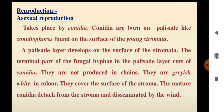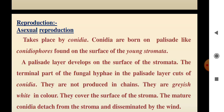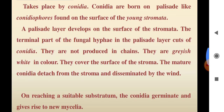Asexual reproduction mainly takes place by means of conidia. Conidia are borne on palisade-like conidiophores found on the surface of the young stromata. The palisade layer develops on the surface of the stroma. The terminal parts of the fungal hyphae in the palisade are cut off as conidia. They are not produced in chains. They are grayish-white in color and cover the surface of the stroma.